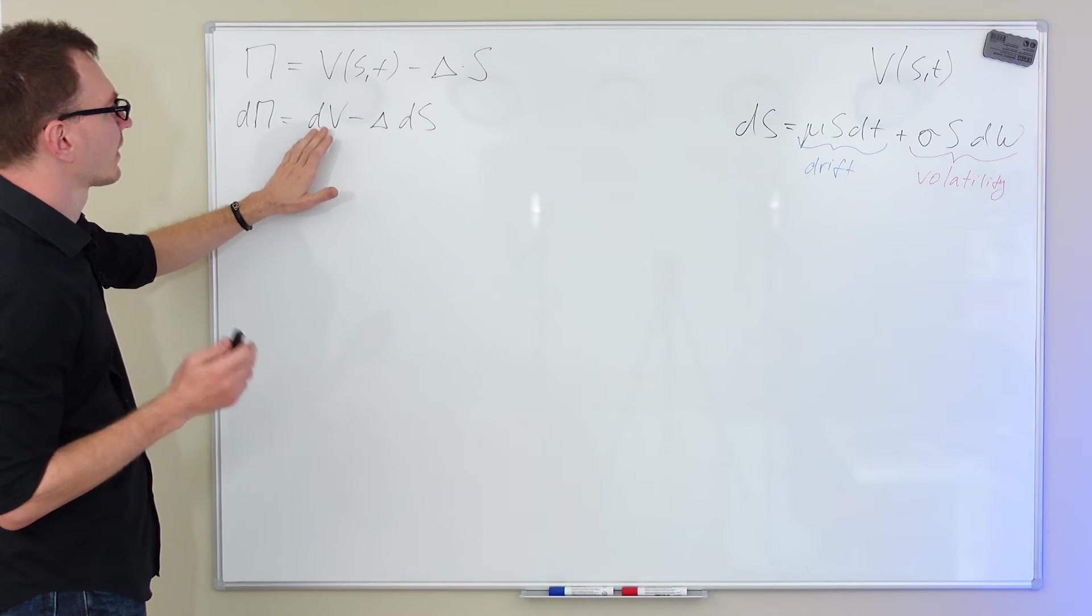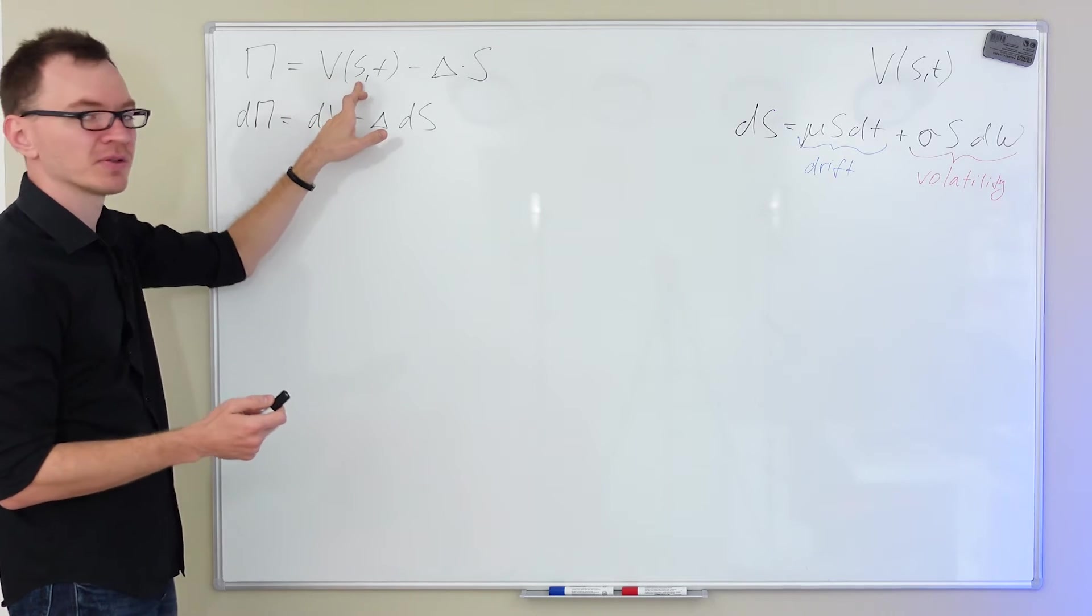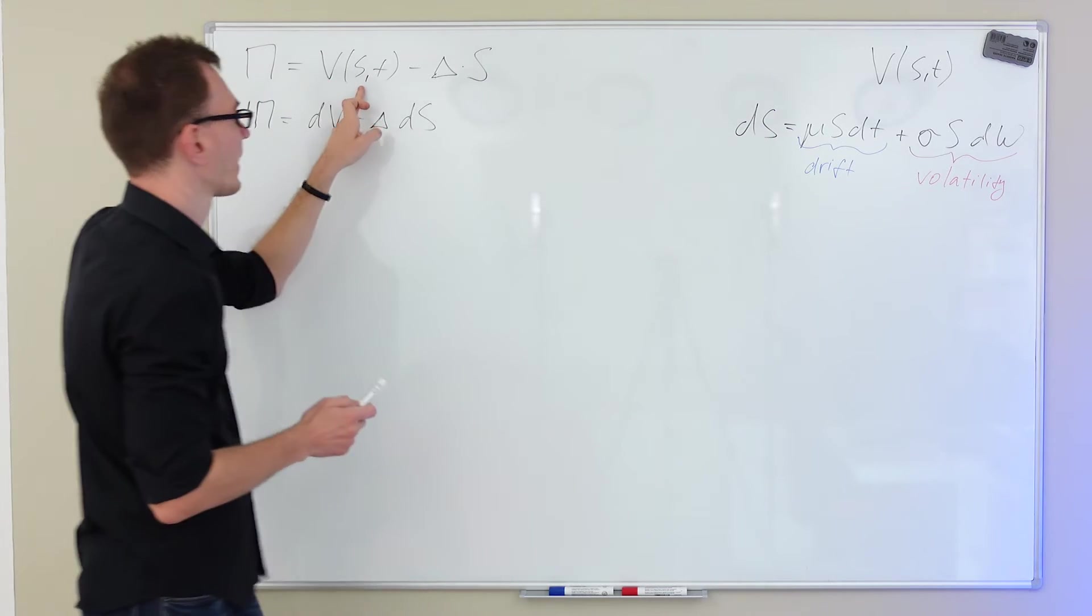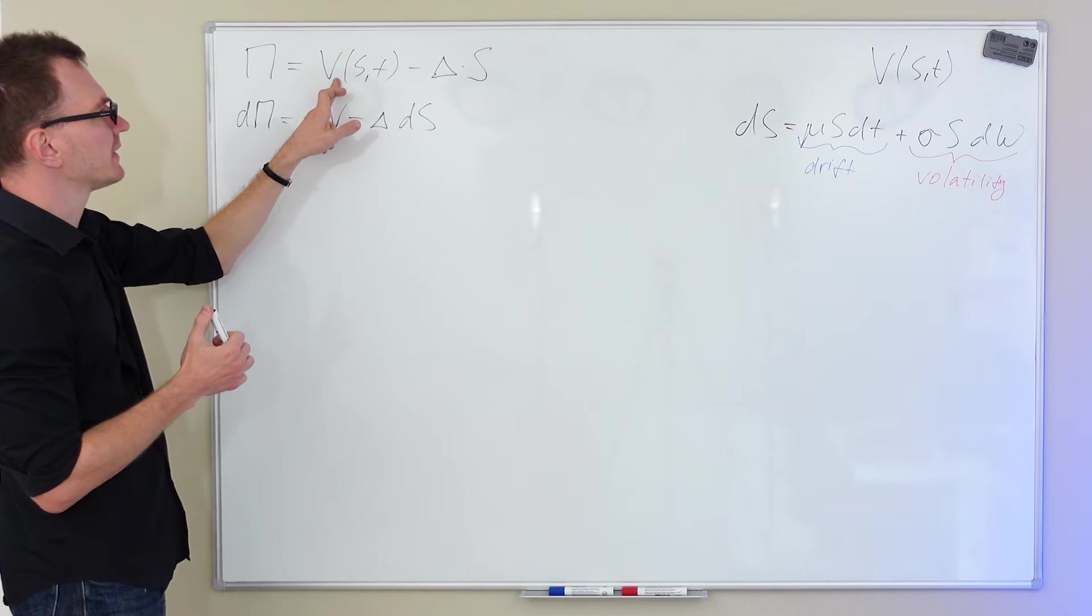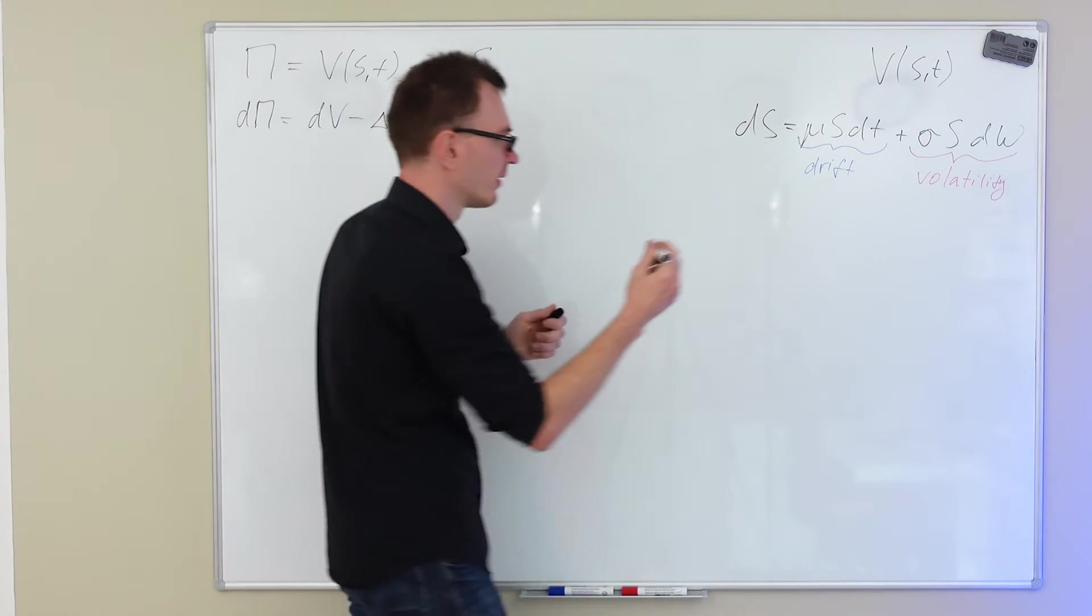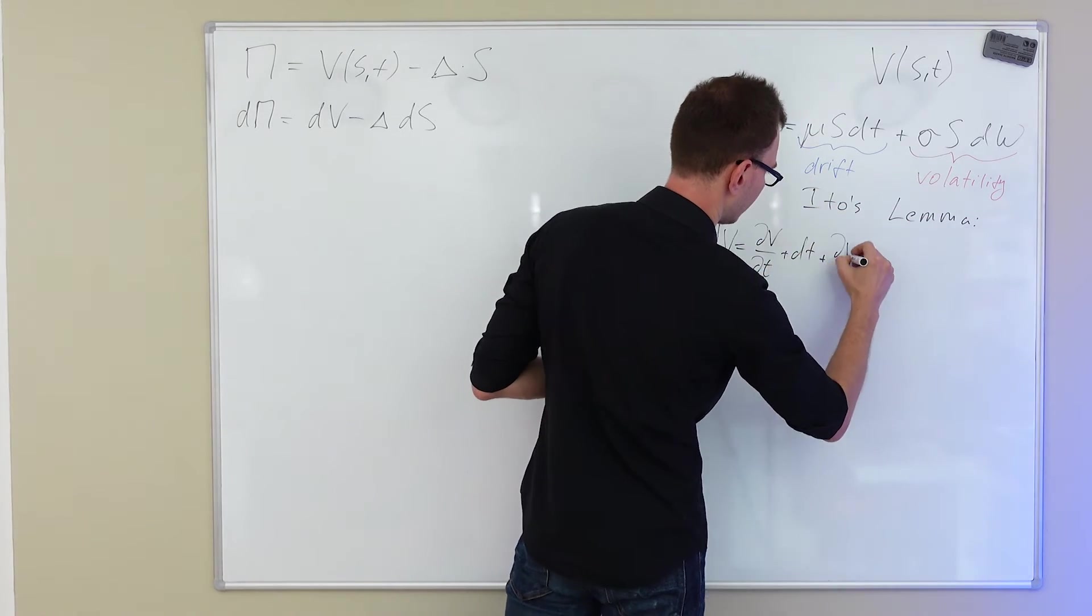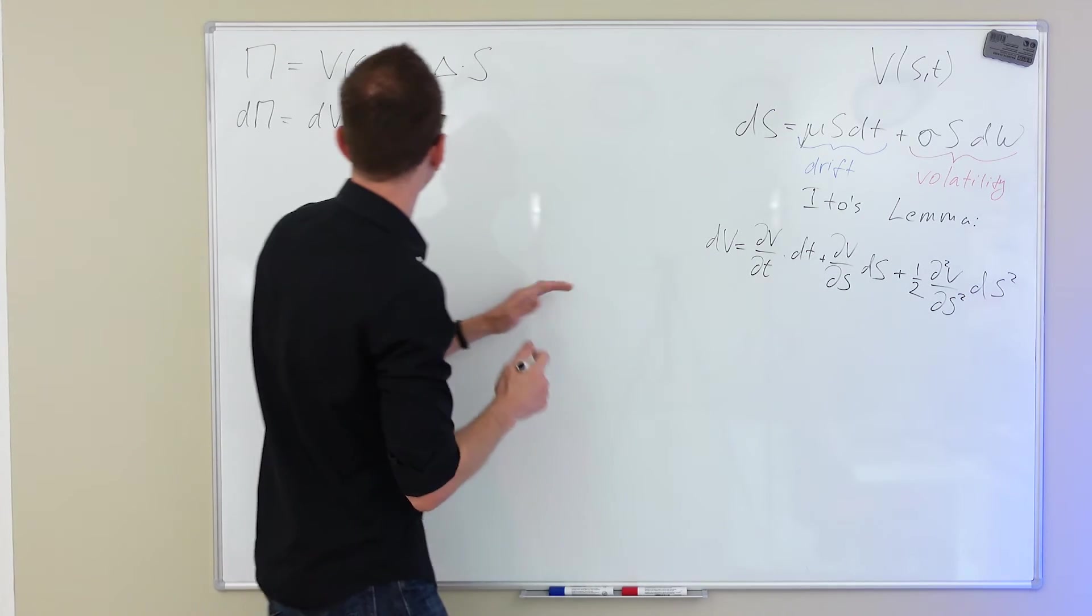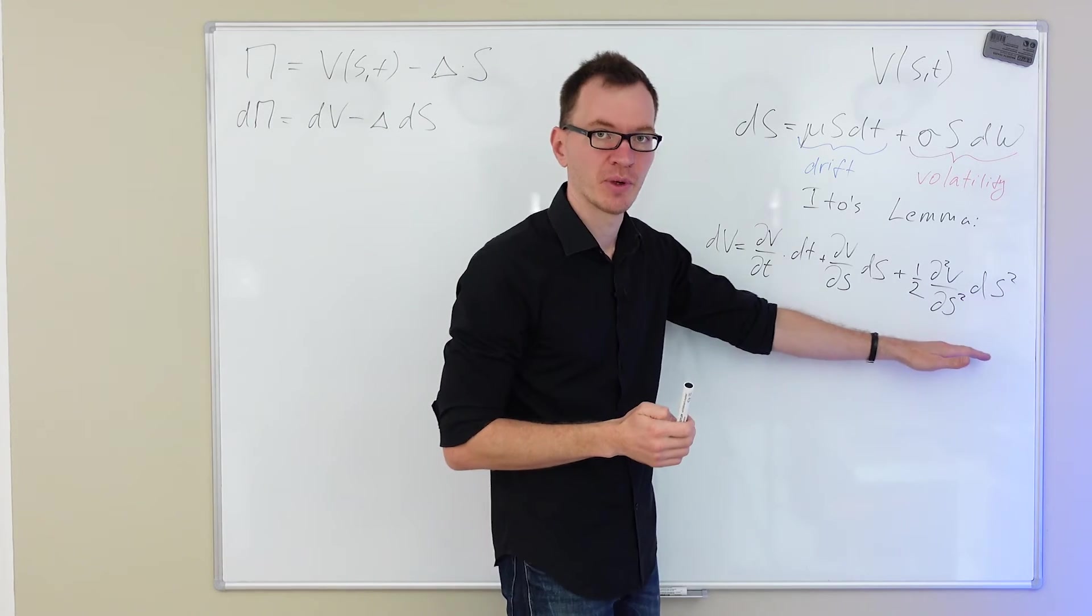How about dV? dV is the change in the value of an option's price. V depends on S and T, so V is a function of a stochastic process S, which we have right here. And what we can use right now is something called Ito's Lemma. Ito's Lemma tells us that if V is a function of a stochastic process, dV should behave as the following. I'm going to write down the Ito's Lemma right here. Now, this is the Ito's Lemma, and it tells us that if V is a function of a stochastic process S, then dV should evolve according to this equation right here.